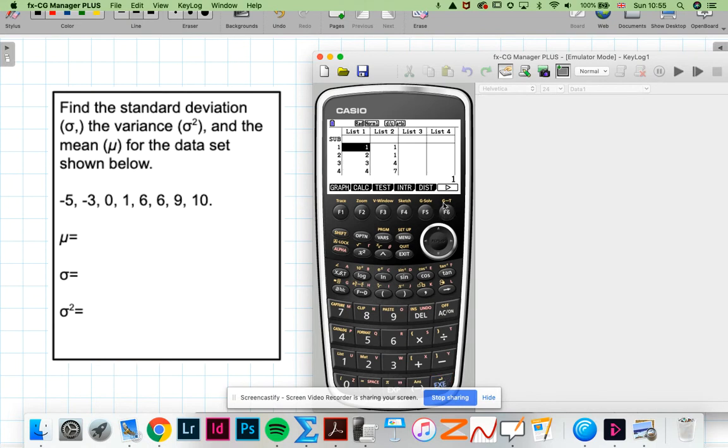I've already got some data in here, so I'm going to show you how to get rid of the data. Just press that arrow, delete, F1, and that will delete all the data in that first list.